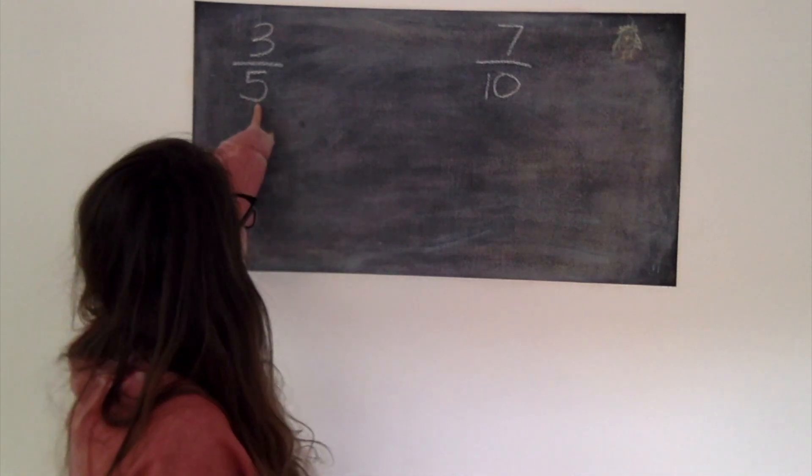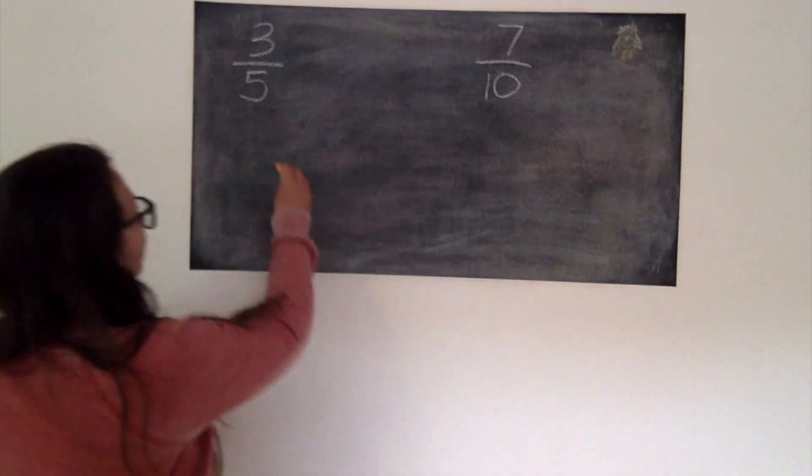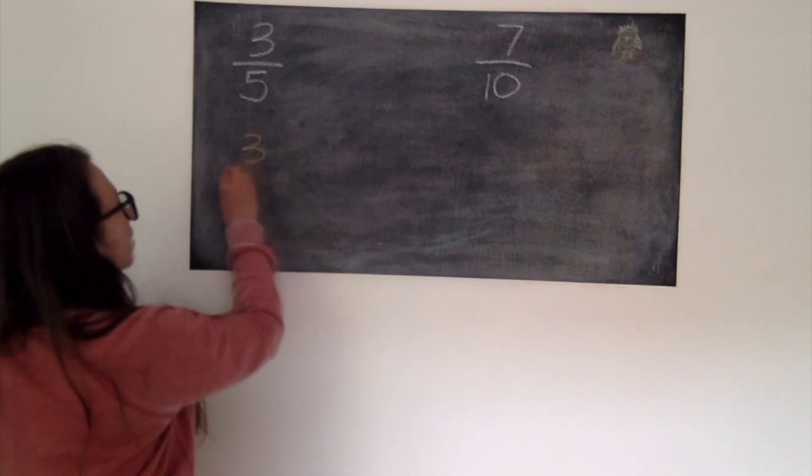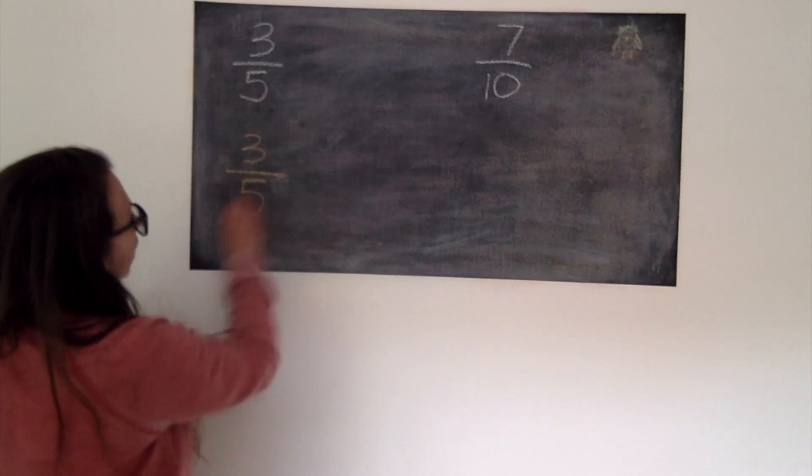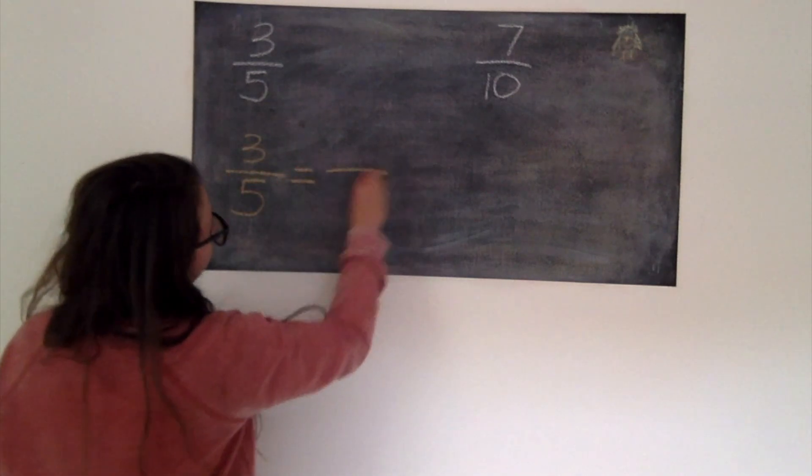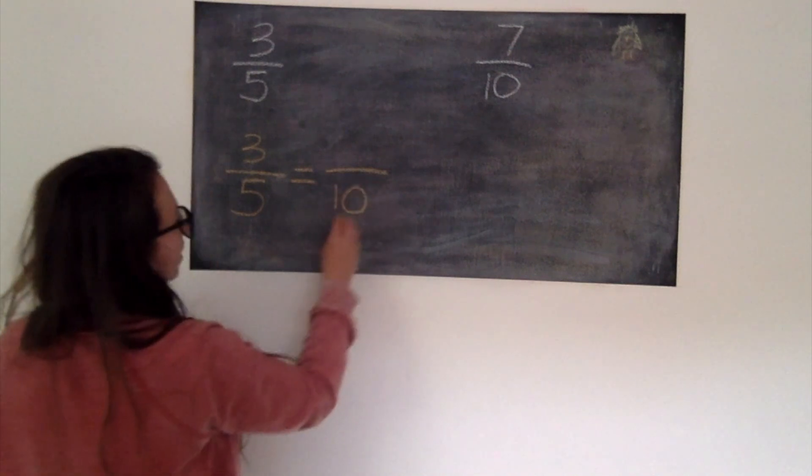So I know that 3/5ths, I can turn that easily into 10ths by doing what we were doing yesterday, finding an equivalent fraction. So 3/5ths is the same as how many 10ths.